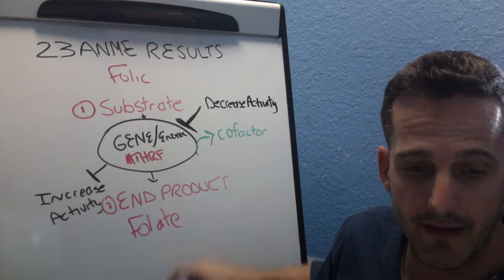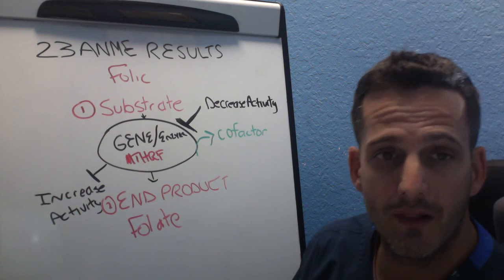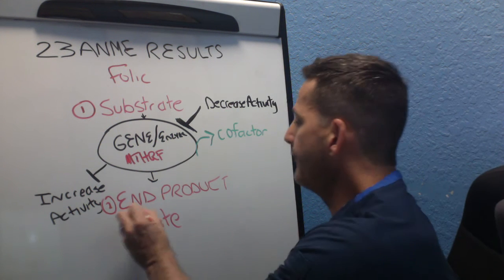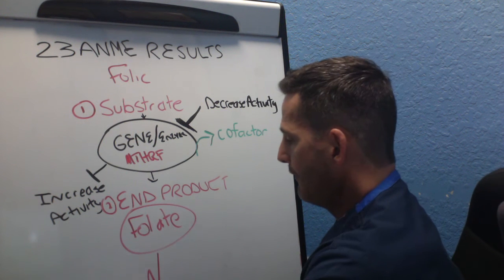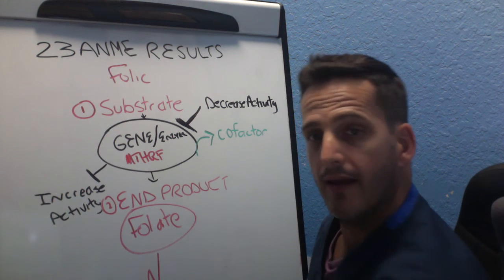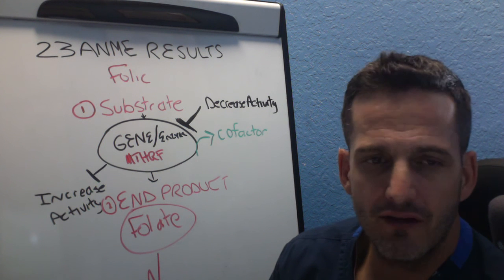It has to become folate. If you don't have a good gene working at optimal efficiency, you don't make a lot of folate. And when you don't make a lot of folate, then you can't carry the same reaction. Then folate is used as a substrate and that substrate is not used to make another product. Kind of lost you.